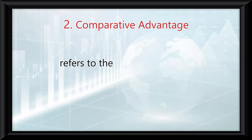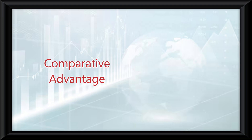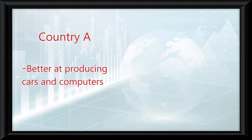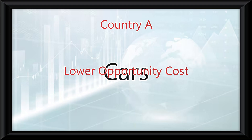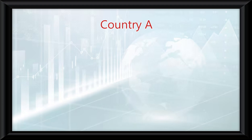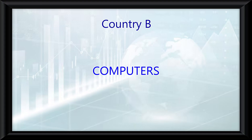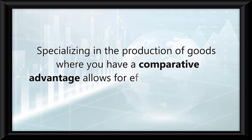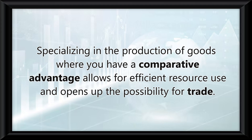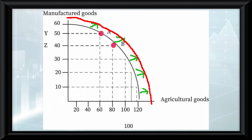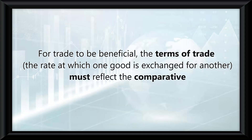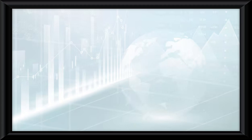Comparative advantage refers to the ability to produce a good or service at a lower opportunity cost than another producer. This is more important in determining the benefits of trade rather than absolute advantage. Even if country A is better at producing both cars and computers, if it has a lower opportunity cost for producing cars than computers compared to country B, it should specialize in cars. Meanwhile, country B should specialize in computers even if it is less efficient, because its opportunity cost for producing computers is lower. Specializing where you have a comparative advantage allows for efficient resource use and enables countries to consume beyond their PPC. For trade to be beneficial, the terms of trade must reflect the comparative advantages of the trading parties, so both can enjoy more of both goods than they could if they tried to produce everything themselves.